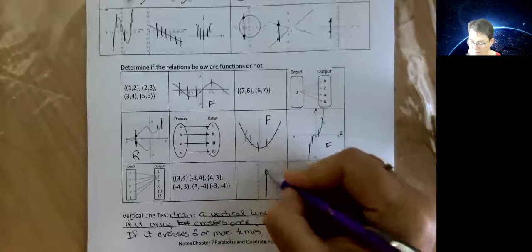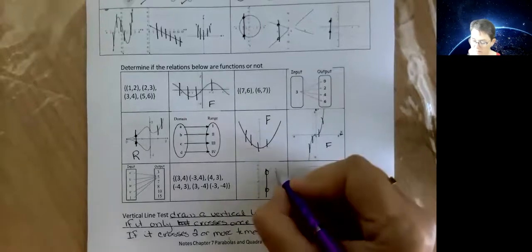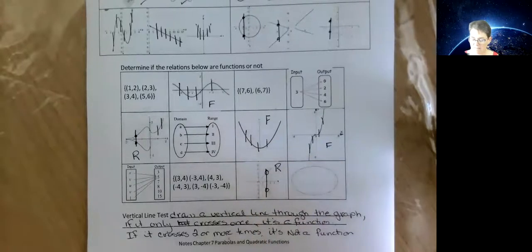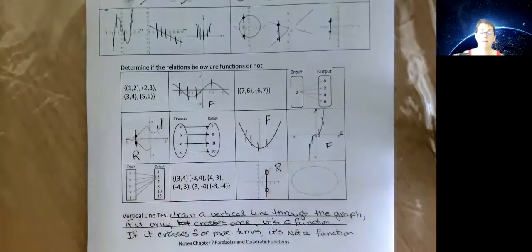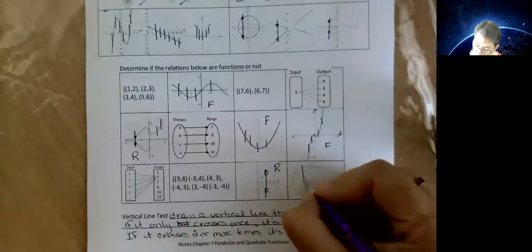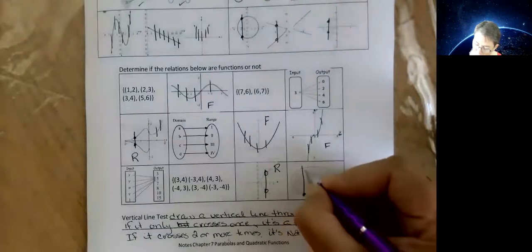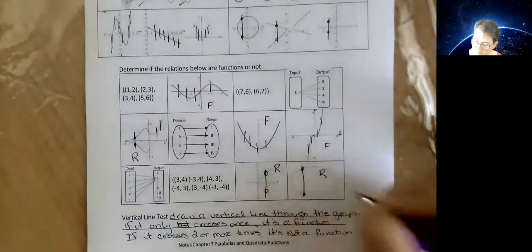This one, boom, right there, makes a relation, not a function. Remember, relations are not functions. And the same thing with this lovely ellipse or oval.